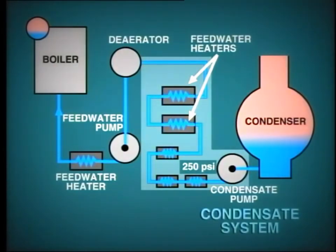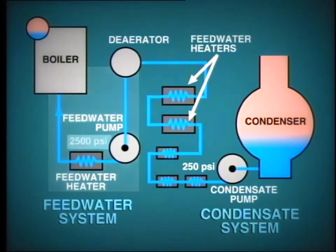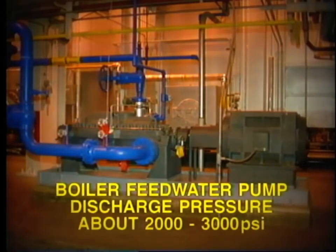From the de-aerator onwards, we refer to the continuation as the feedwater system, which operates at much higher pressure. The pressure developed by the boiler feedwater pump must be sufficient to overcome losses in the piping system plus the pressure in the boiler itself. This means that the boiler feedwater pump discharge pressure must be about 2,000 to 3,000 PSI, depending upon the particular installation.